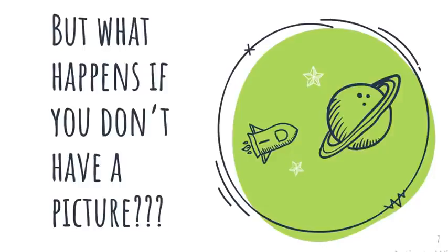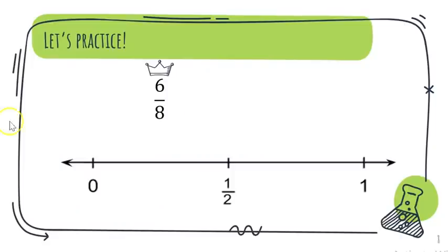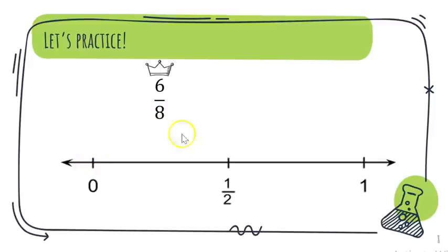In third grade you'll have pictures when you deal with fractions, but you need to start thinking about what happens if you get a fraction and don't have a picture. We're going to work through this with a number line. Looking at six-eighths: my numerator is six and my denominator is eight, which means to get from zero to a whole, I need eight pieces.